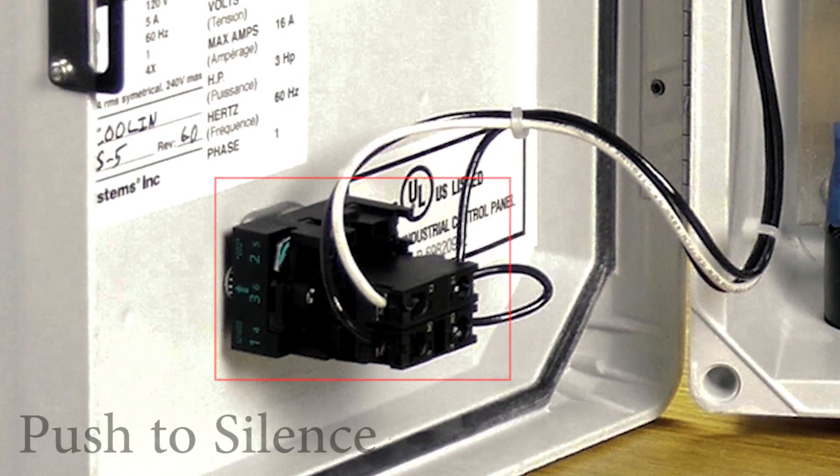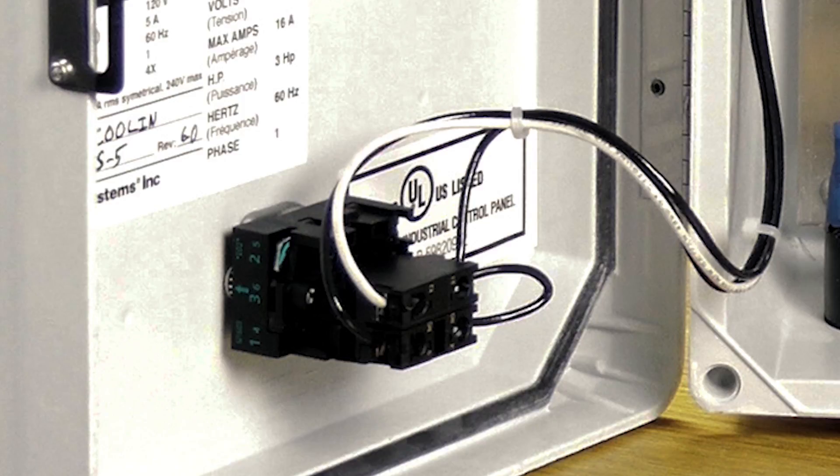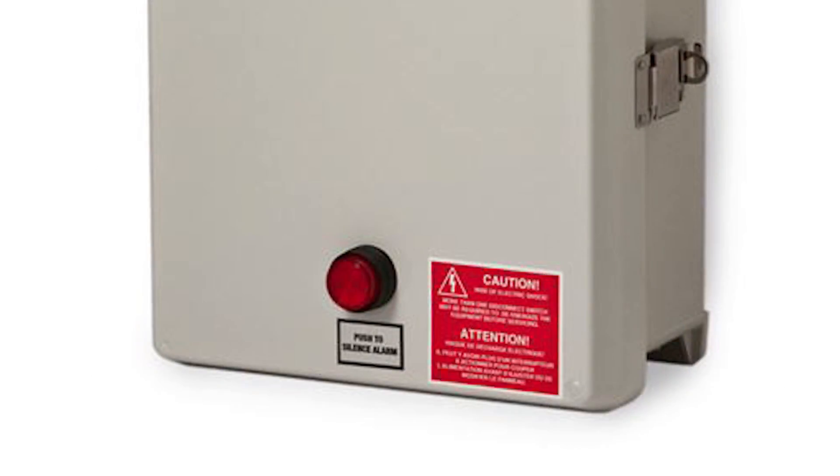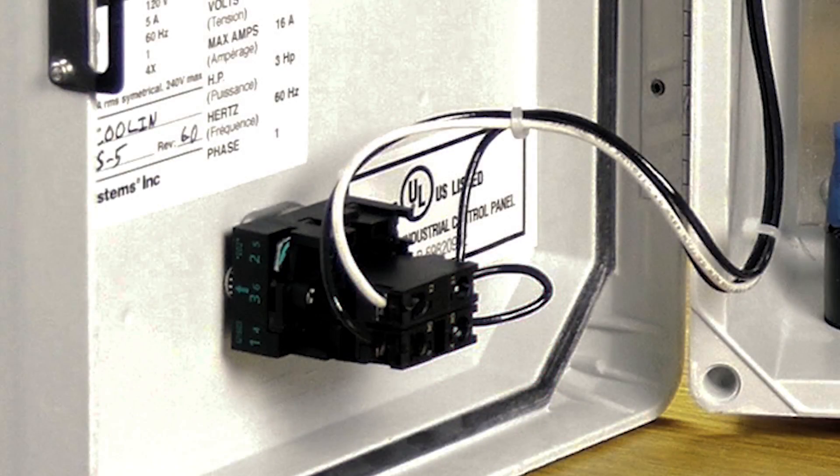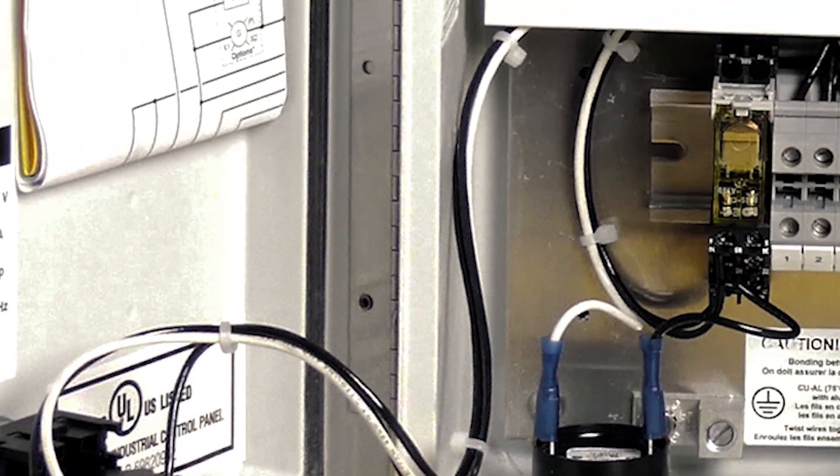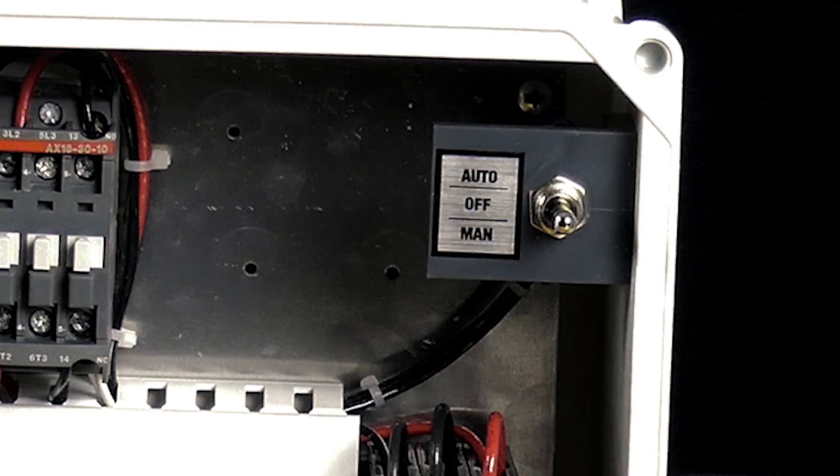Moving over, we've got the push to silence button, which is a nice feature to have where on that button on the outside, there's going to be an LED. So in the event of an alarm condition, both the horn and the button is going to light up. And then you just push that to silence it so that you can then come over here and try to clear that alarm condition. In most cases, that's just coming over here, flipping it to manual and starting the troubleshooting from there.